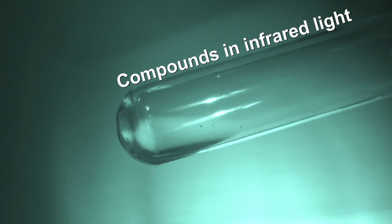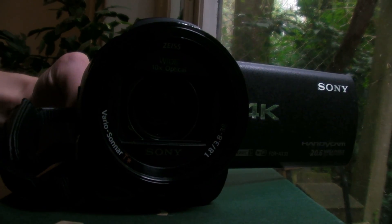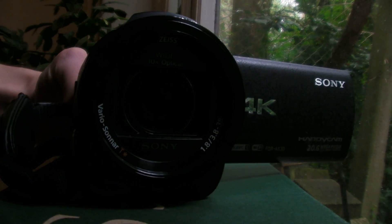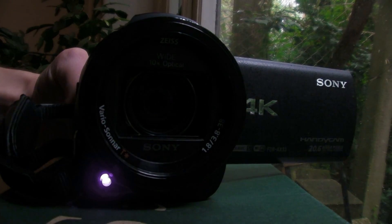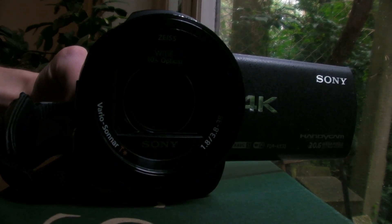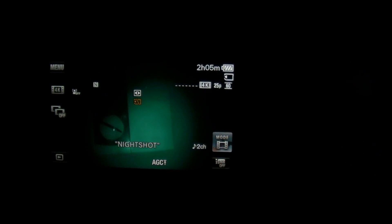Compounds in infrared light. Some camcorders have a night shot mode which enables them to film in complete darkness. For this, an infrared lamp is integrated and used as a light source while the exposure is increased by removing an infrared filter.